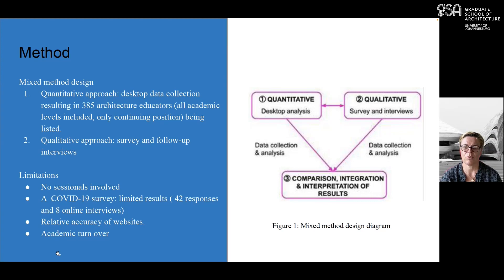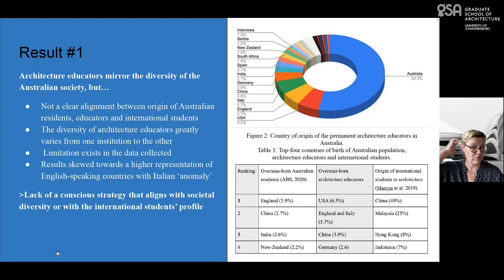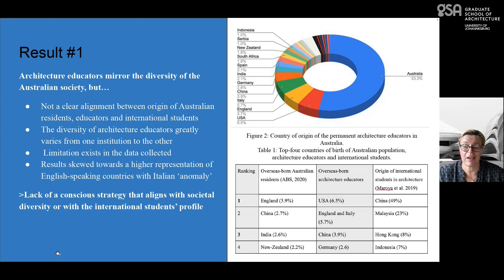Another limitation concerned the accuracy of the websites, which was not always very accurate, and the fact that some people left their institution while I was doing the study. The first result was quite interesting in terms of cultural background — architecture educators in Australia mirror the diversity of Australian society in numbers. In Australia, almost 39% of the population is born overseas, and we found more or less the same percentage within the school of architecture.